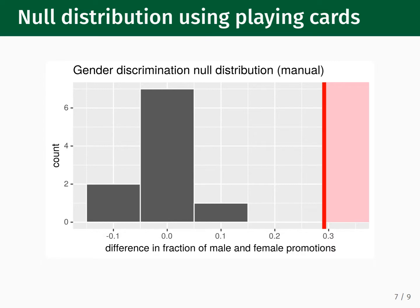The shaded red region corresponds to outcomes that are more extreme than what we observed in the experiment. As you can see, the experimental result sits far to the right of the null distribution, with none of the simulated trials resulting in a difference in proportions larger than the observed experimental value. Qualitatively, this means that it is unlikely that this experimental result would arise from chance alone.